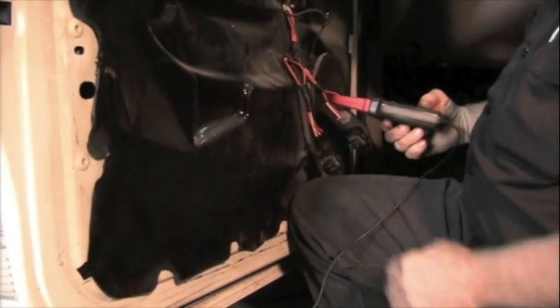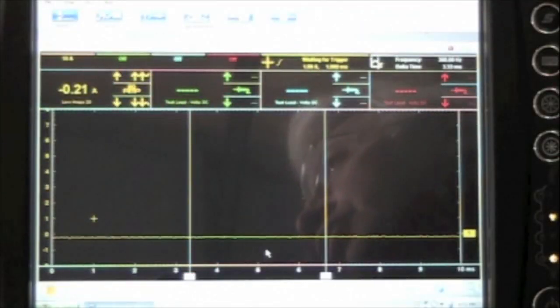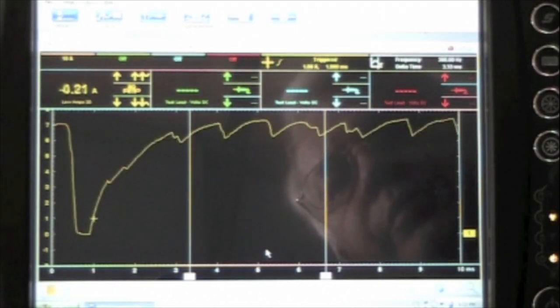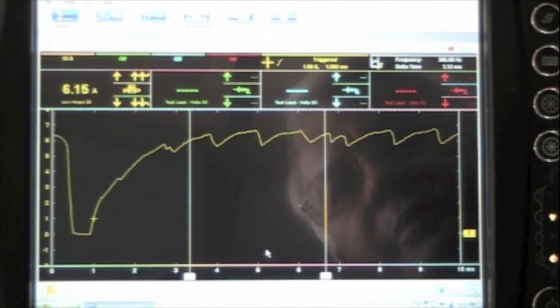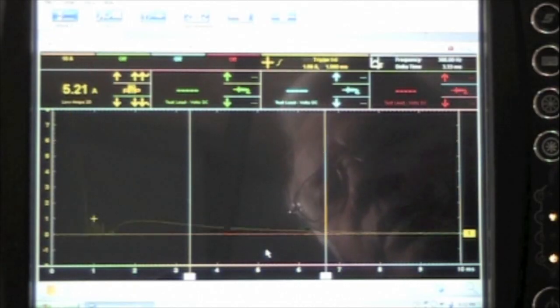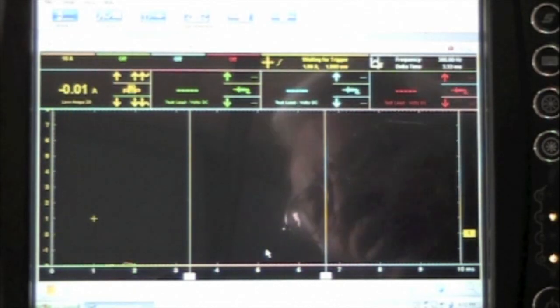And now we can test that switch. Now we're at the driver's side motor and the window is all the way up. I'm going to hit the switch and pull the window down. You can see the pattern. Now the window is all the way down. We're going to make the window go back all the way up.